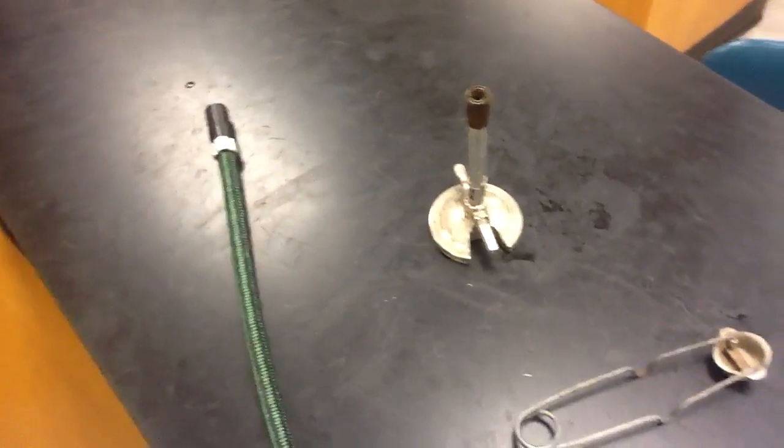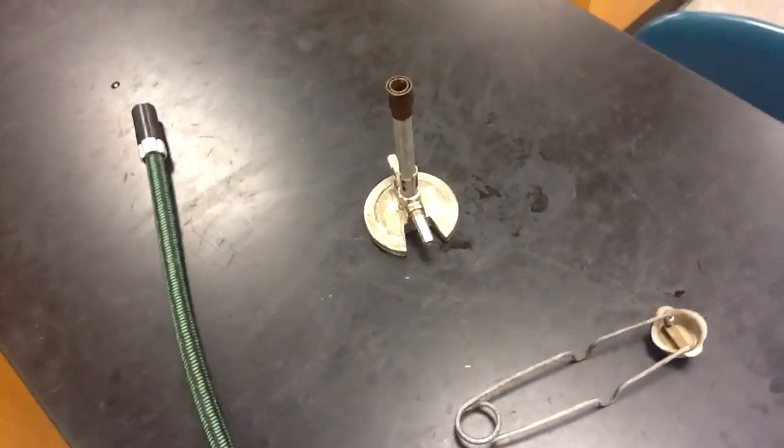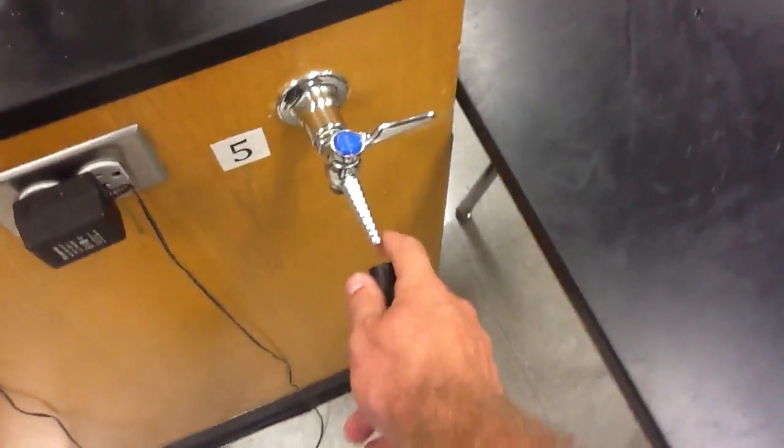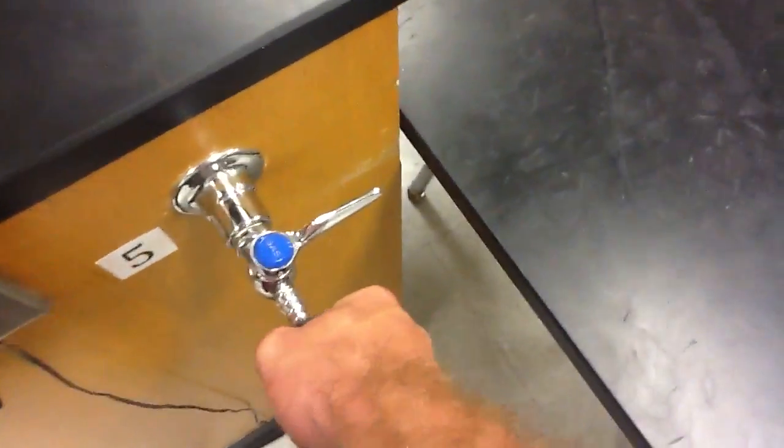Alright, next thing you need to do is connect the Bunsen burner so it can be lit. You're going to want to take off this tennis ball - don't throw it though. Connect the hose to the valve and the other end to the burner.